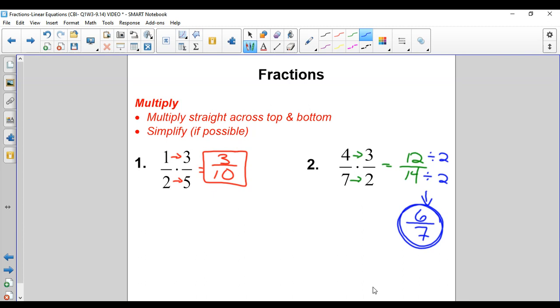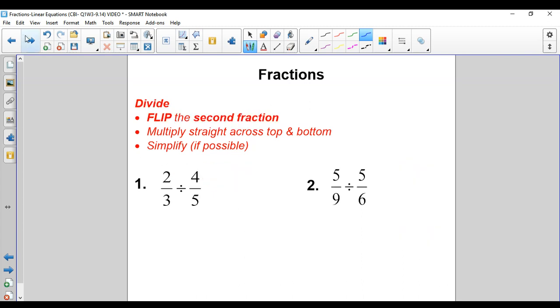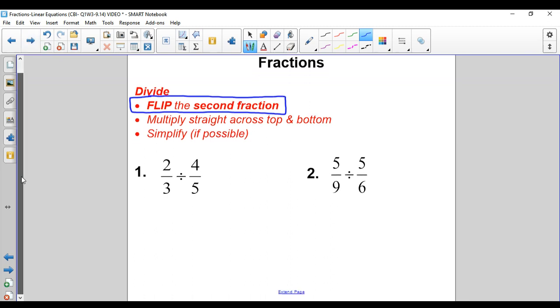That's all we have for multiplication. Now dividing, here's the thing. Big thing here: we need to flip the second fraction, and then all that becomes is multiplication after. So in number one here, this is the second fraction, so we flip it.